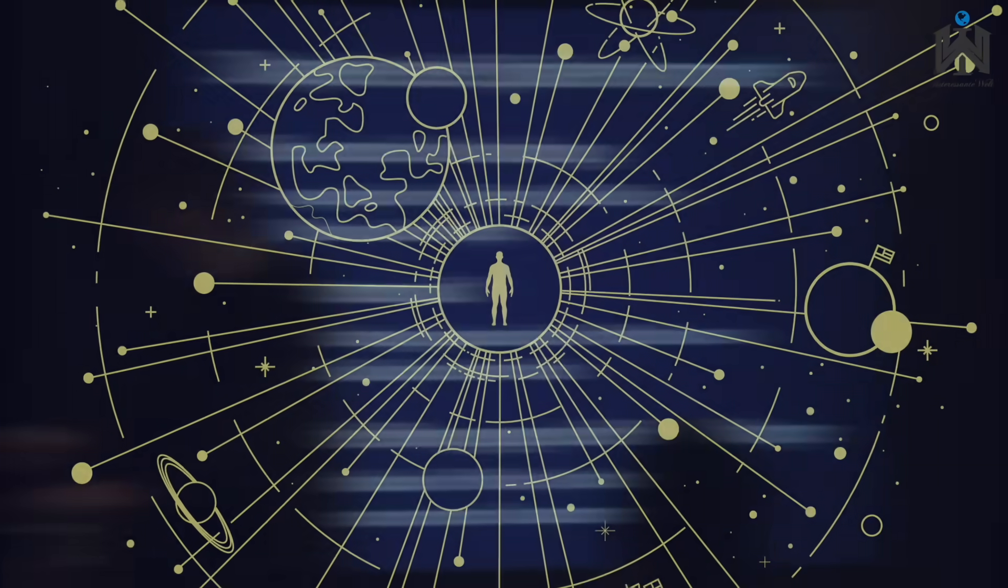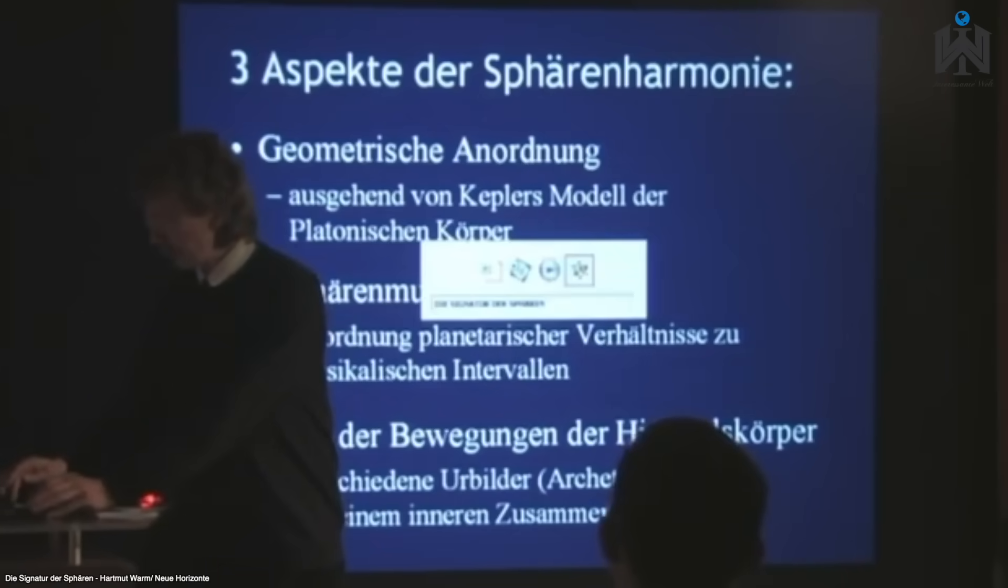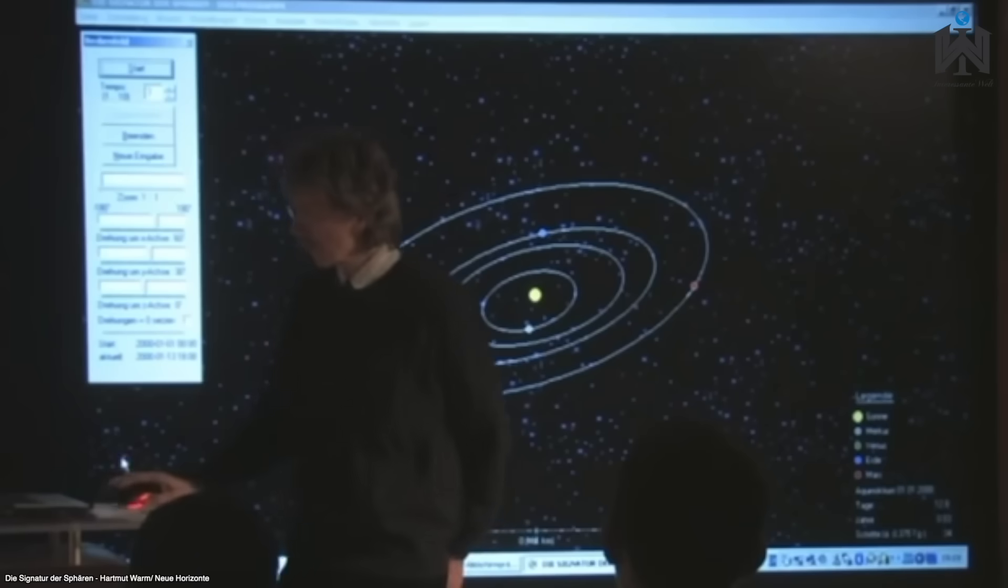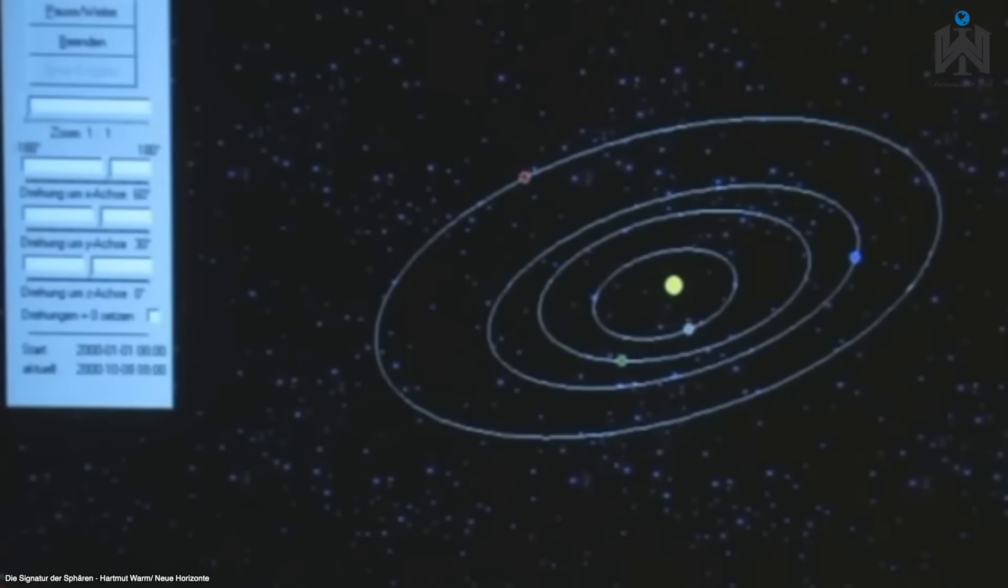Heute können wir mit unseren technischen Mitteln das Ganze wieder auf eine neue Stufe stellen, so der Forscher Hartmut Warm. Er hat nämlich mithilfe von Computersimulationen versucht, diese Harmonie zu veranschaulichen. Dies tat er in seinem Buch Die Signatur der Sphären.